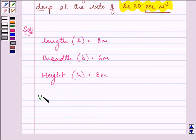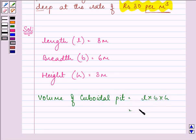With the help of the knowledge of the formula of the volume of a cuboid, we can find out the volume of a cuboidal pit. That will be length into breadth into height, 8 into 6 into 3, that is further equal to 144 meter cube.